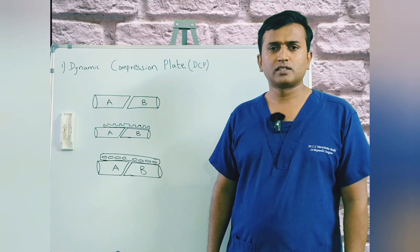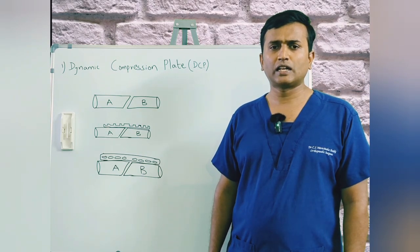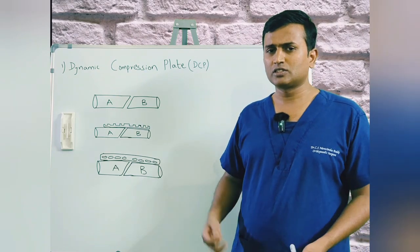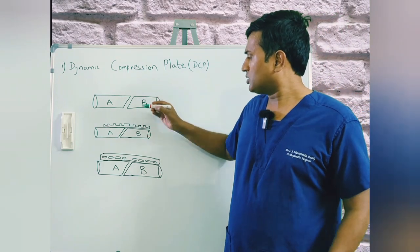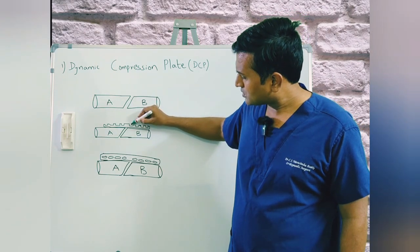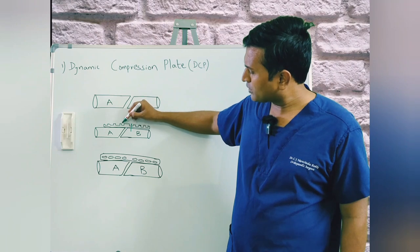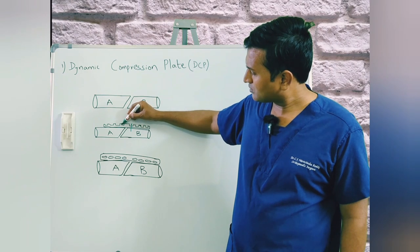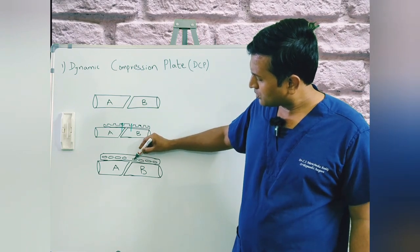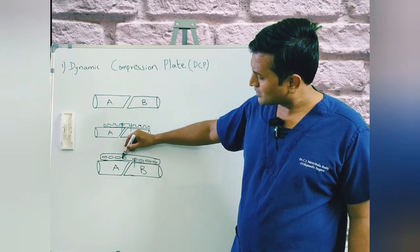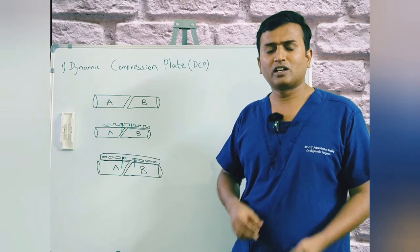Now we will see how to use the dynamic compression plate in an oblique fracture, which is very important for achieving better compression at the fracture site. In an oblique fracture, we fix the centric screw at the center on one side, and the eccentric screw on the other side. This arrangement gives more compression at the fracture site.